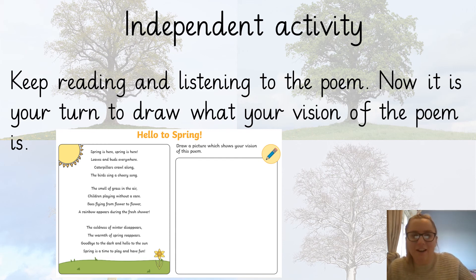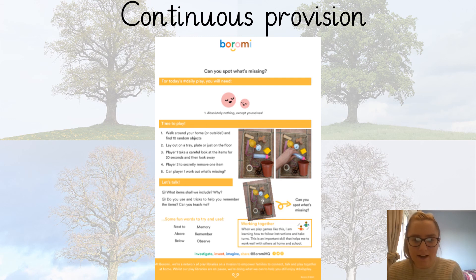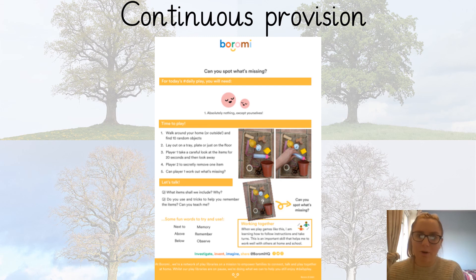Have fun and good luck everyone. Now, it's time to play a game. Go around your home and choose a few random objects — up to ten is enough. Put them out on a tray, plate, or on the floor. Then person number one takes a careful look at all of the items, then turns around and looks away. Player two removes one of the items and hides it behind their back. Player one can then turn back around and see what is missing. If they guess it right, you can swap over. If not, try again. Have fun everyone.